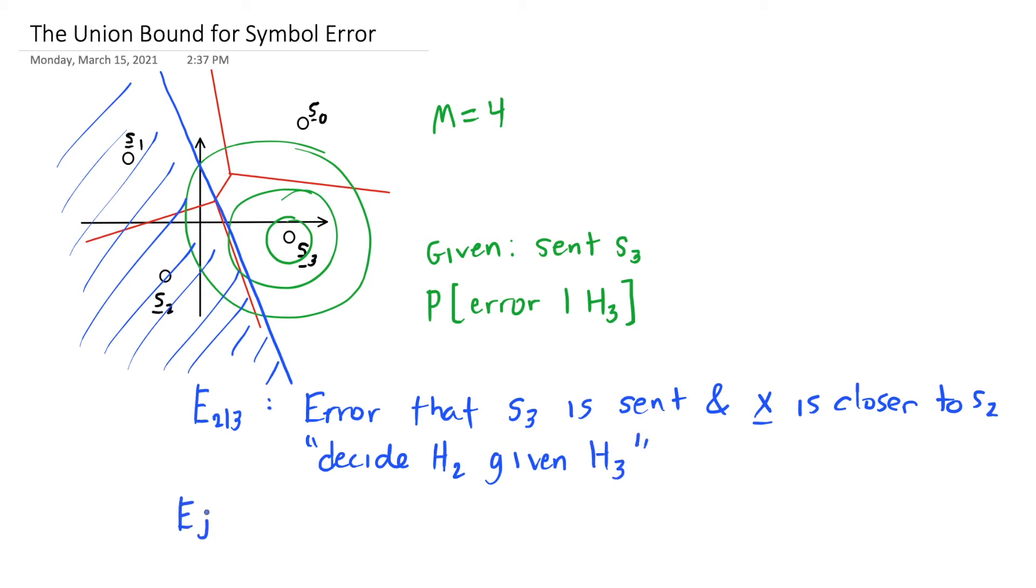In general, I'm going to talk about ej given i, that we're going to decide hj given that hi is true, or that sj was sent given that si was actually sent. This error event isn't exactly a great name because the error event decide h2 given s3 also includes this part of s1. But remember, we're going to be doing overlapping areas and taking the union of those events.